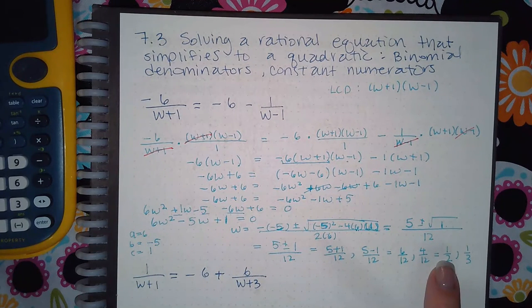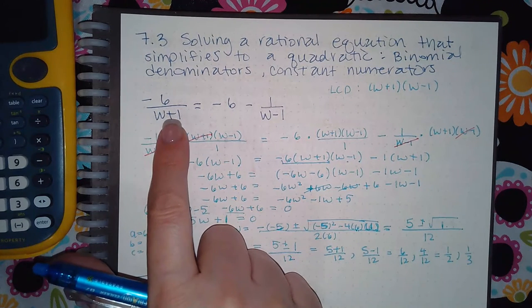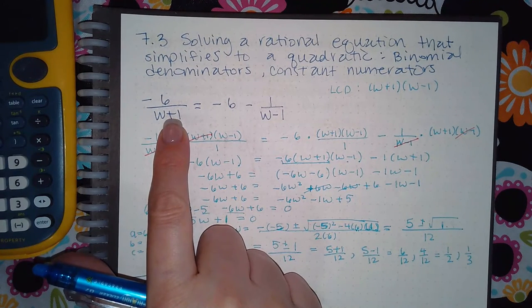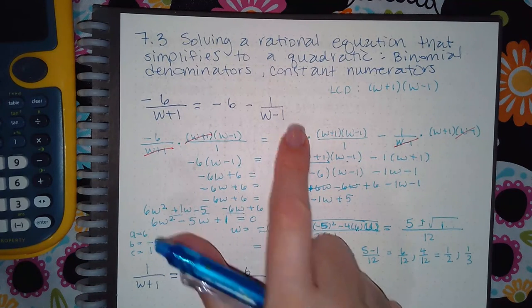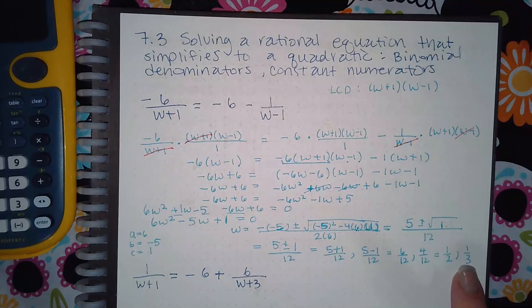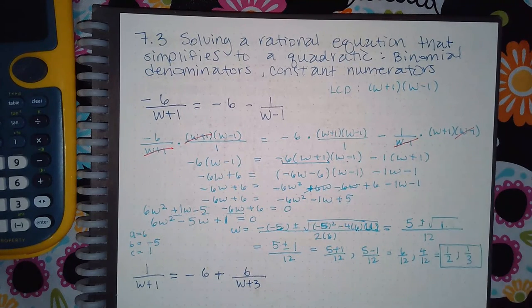When I try to check 1 third, 1 third plus 1 will not be zero, and 1 third minus 1 will not be zero. So 1 third is also a solution. So in this particular problem, we have two solutions: 1 half and 1 third.